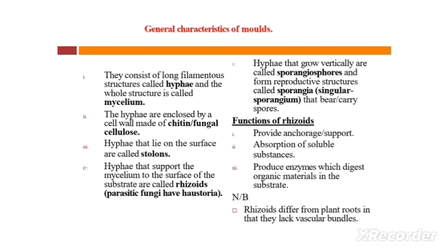Number five: hyphae that grow vertically are called sporangiophores, and they form reproductive structures called sporangia — singular: sporangium — which bear or carry spores.